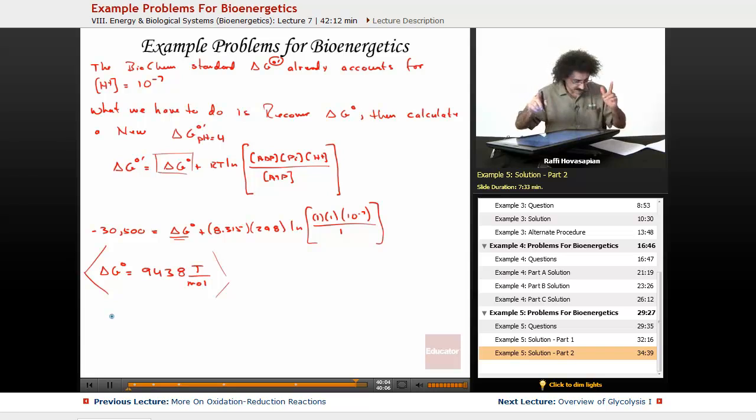So now we take this number and we readjust using a pH of four or a hydrogen ion concentration of 10 to the negative four. So we go delta G biochem standard for a pH equal to four is going to equal 9,438 plus, same thing, 8.315, the RT,